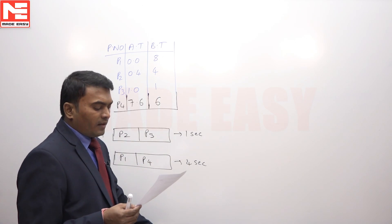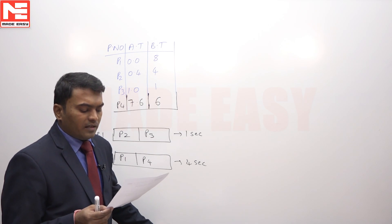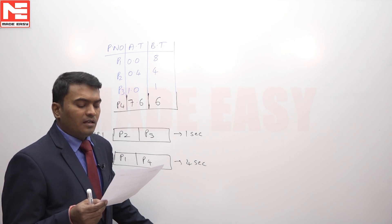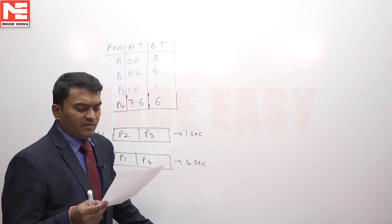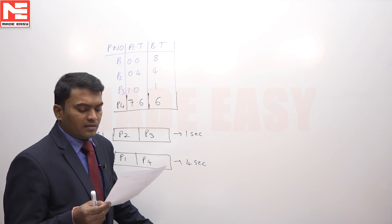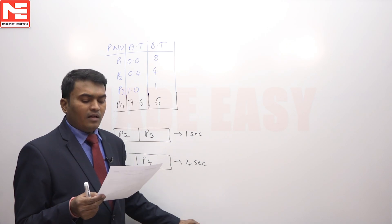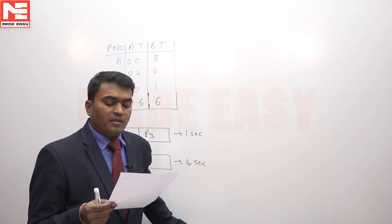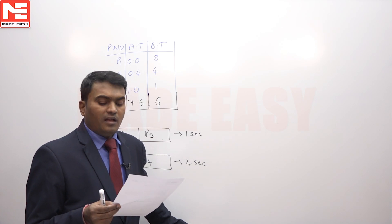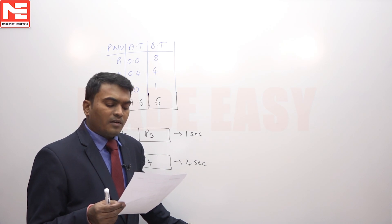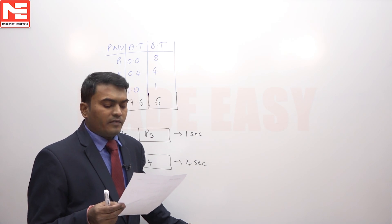P2 and P3 are placed in the first queue, and P1 and P4 are placed in the second queue. Processes in Q1 get 1 second of CPU time, and processes in Q2 get 4 seconds of CPU time. The dispatching strategy is: 2 processes from the first queue followed by 1 process from the second queue. The question asks for the average turnaround time.